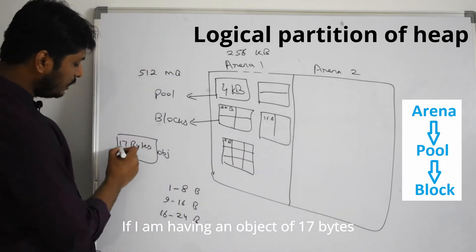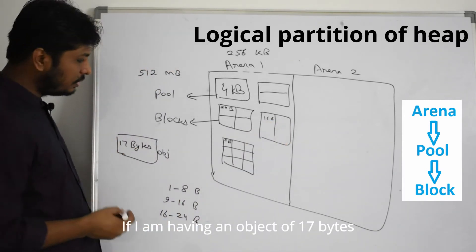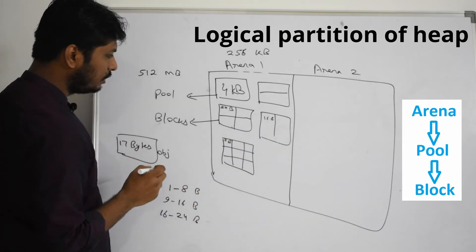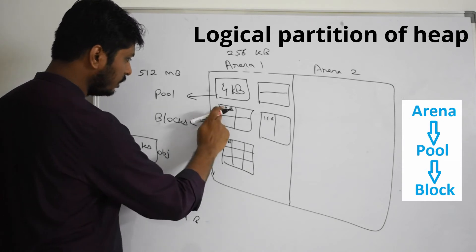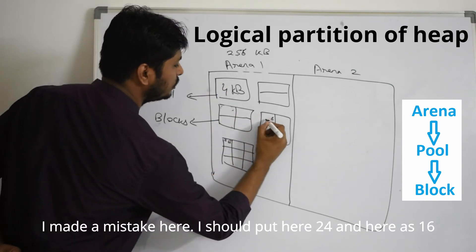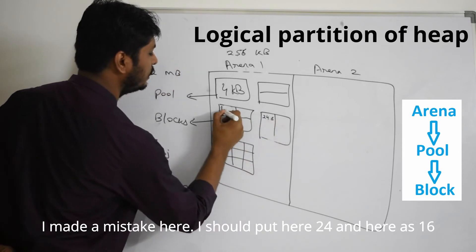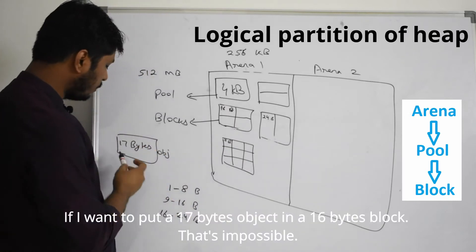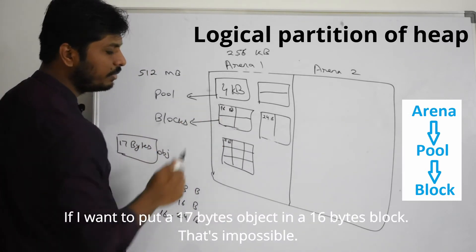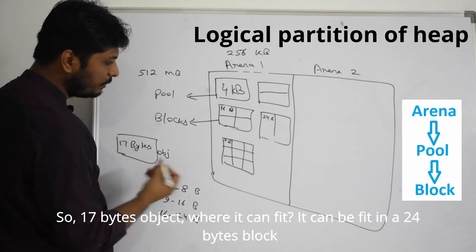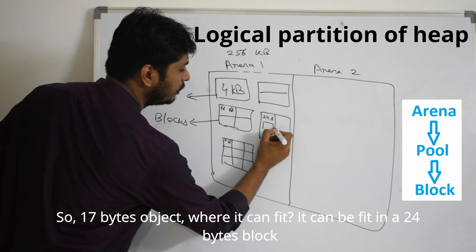This is my smaller block of 8 bytes and this is my little bigger block of 16 bytes. If I'm having object of 17 bytes, of course I cannot fit that in a 16 byte block. So for a 17 byte object, where can it be fit? It can be fit here in a 24 byte block.